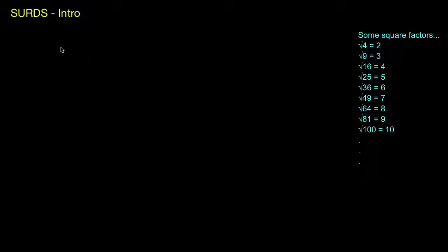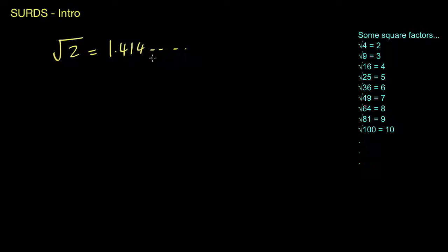A surd is a square root that can't be simplified any further. Often you'll see something like the square root of 2. If you put that in a calculator you'll get something like 1.414 with those numbers carrying on forever. Because those numbers go forever, we call that an irrational number. If we were to write this down as just 1.414 we've lost the rest of the information, so often we just keep it as the square root of 2 on paper, or place it directly into our calculator so that we don't get rounding errors.